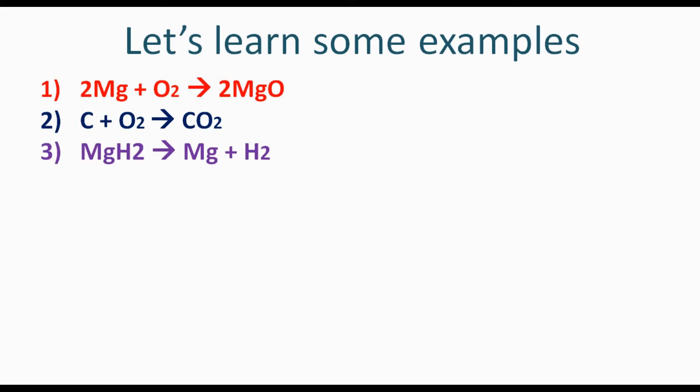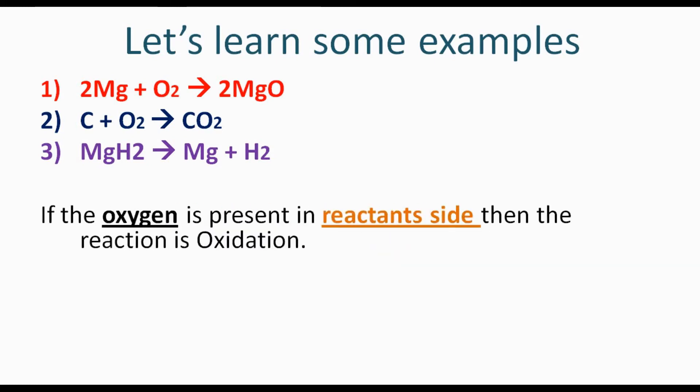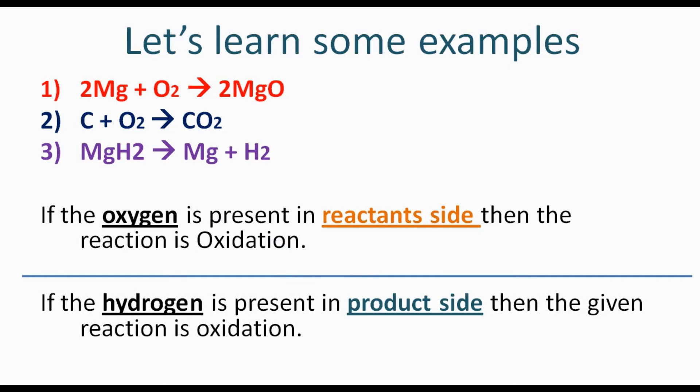Third example: Mg + H2 → MgH2. Here Mg loses hydrogen — wait, Mg combines with H2. Now if you have noticed: if oxygen is present on the reactant side, then the reaction is oxidation. Looking at examples 1 and 2, oxygen is on the reactant side, so they are oxidation reactions. Another possibility: if hydrogen is present on the product side, then the reaction is also oxidation.